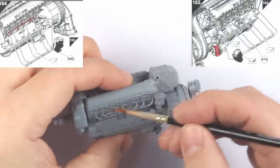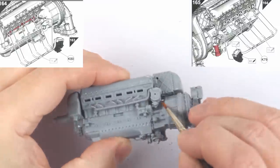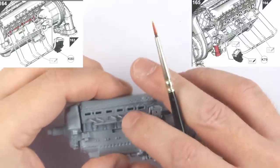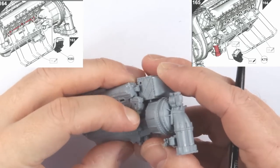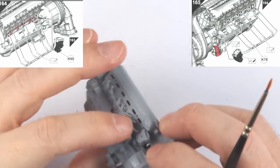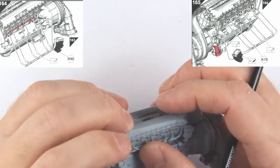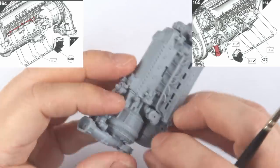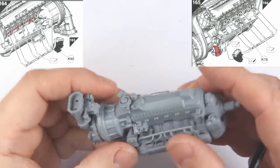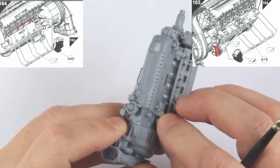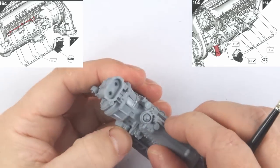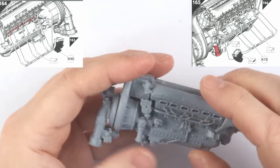Part K80 is a bit of a pain, since all six lines need to go into the engine before you can seat it properly, and it does require a bit of clean up to aid in this and to remove seam lines. Once all lines are in however, they're deep enough to hold the part for cementing. I expect this is one area that some people will want to replace, though the kit part is perfectly adequate. Step 165 repeats this process for the other side.